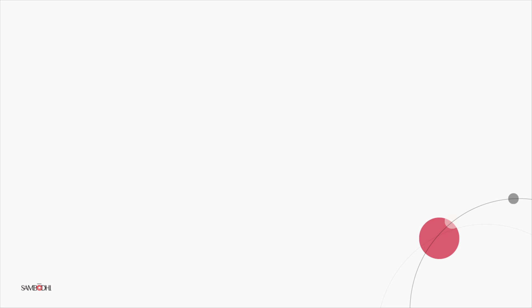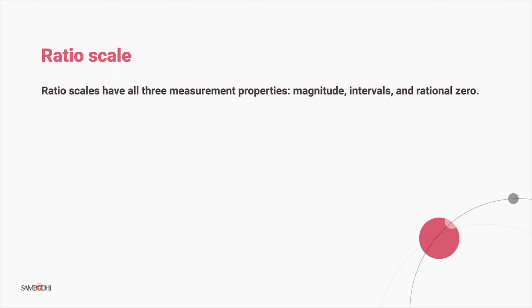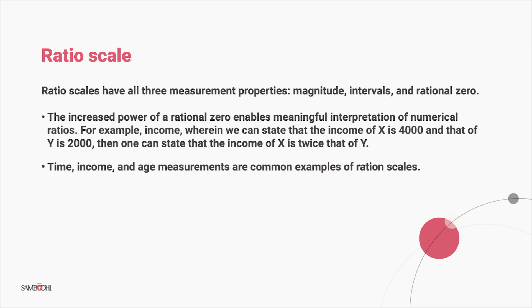Last but not least is the ratio scale. Ratio scales have all three measurement properties: magnitude, intervals, and rational zero. The increased power of a rational zero enables meaningful interpretation of numerical ratios. For example, income, where we can state that the income of x is 4000 and that of y is 2000. Then one can state that the income of x is twice that of y. Time, income, and age measurements are common examples of ratio scales.